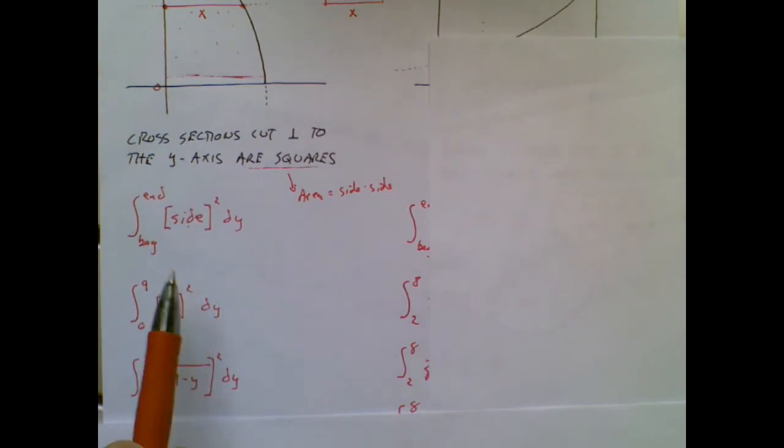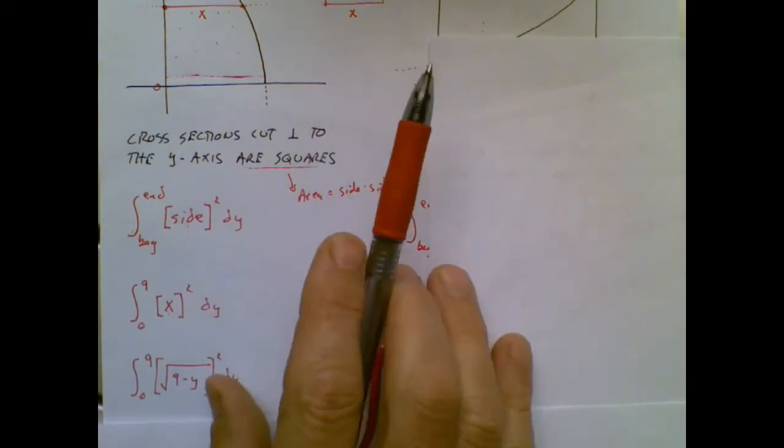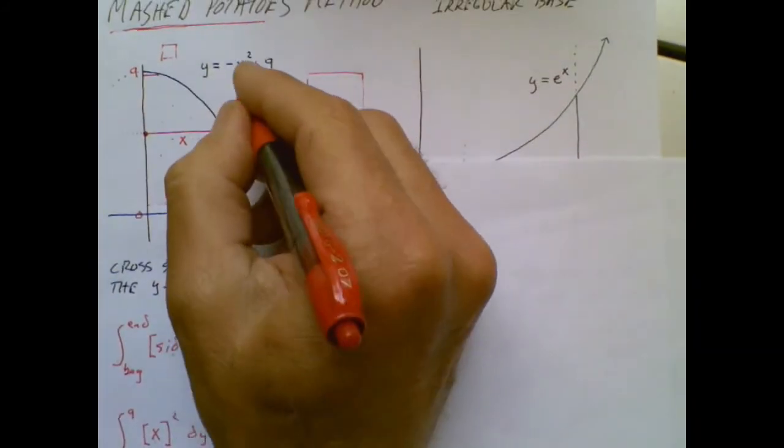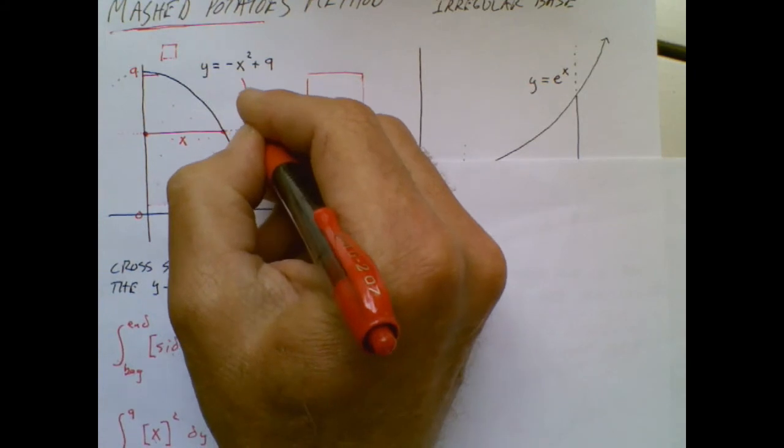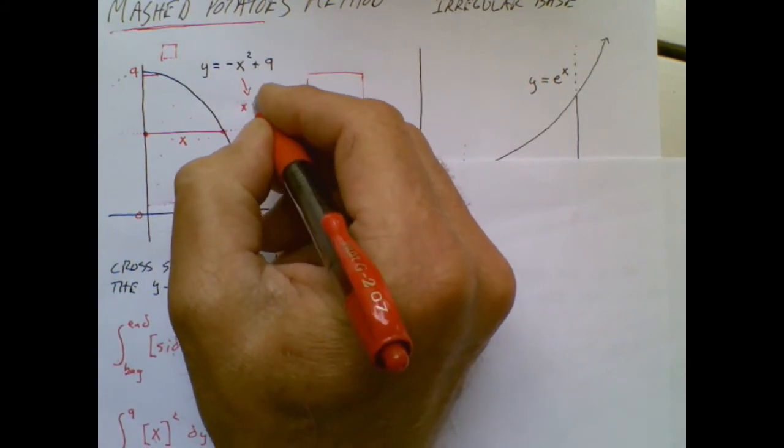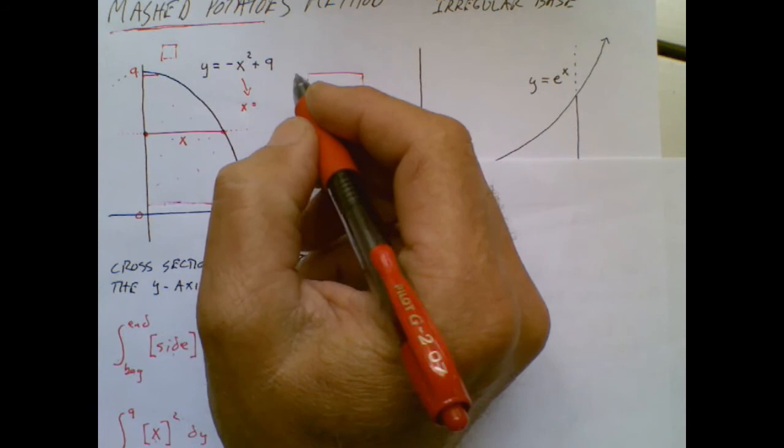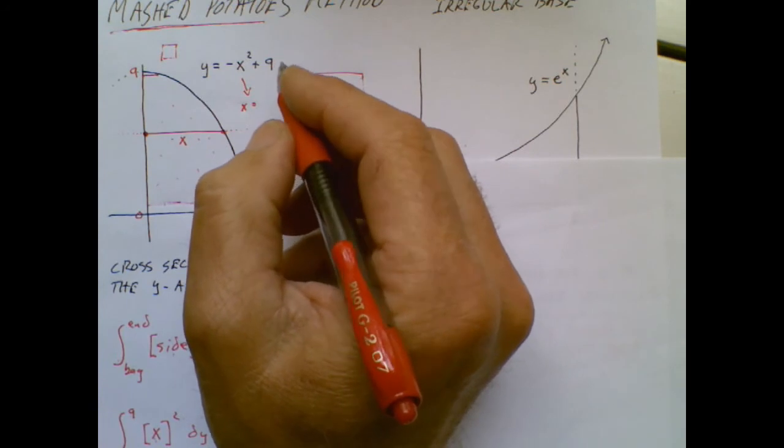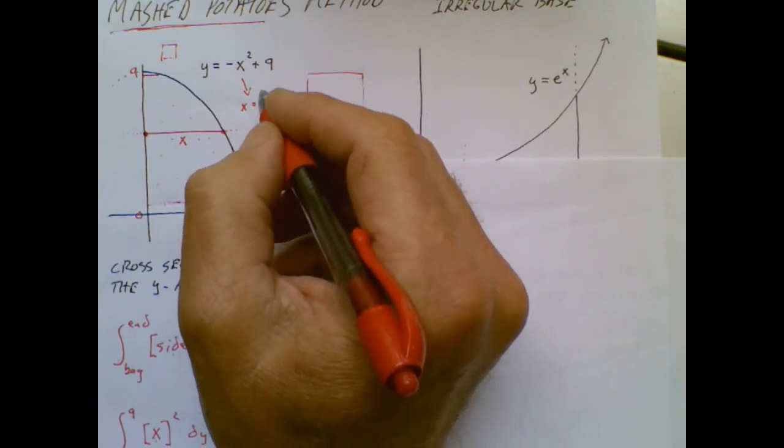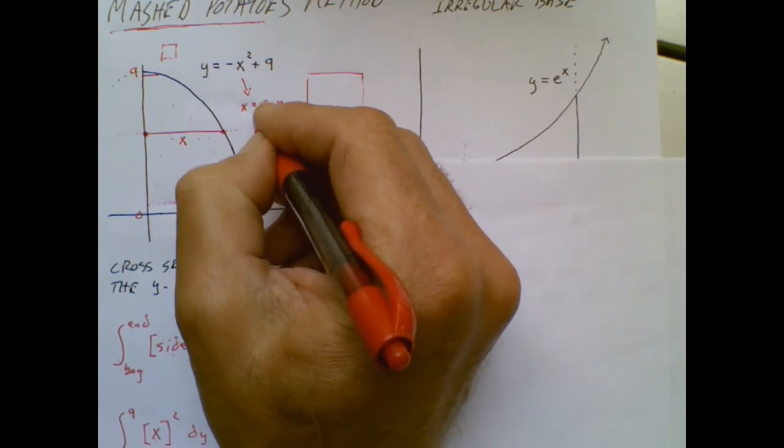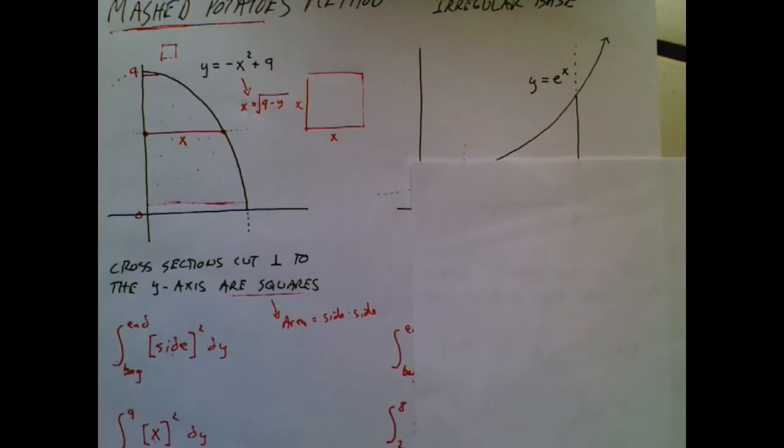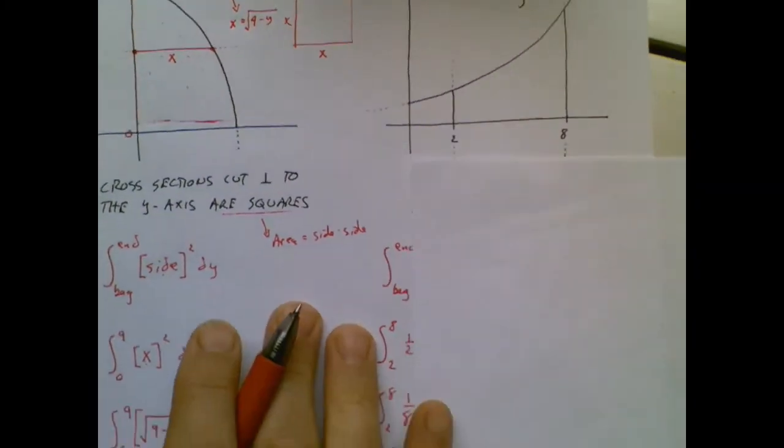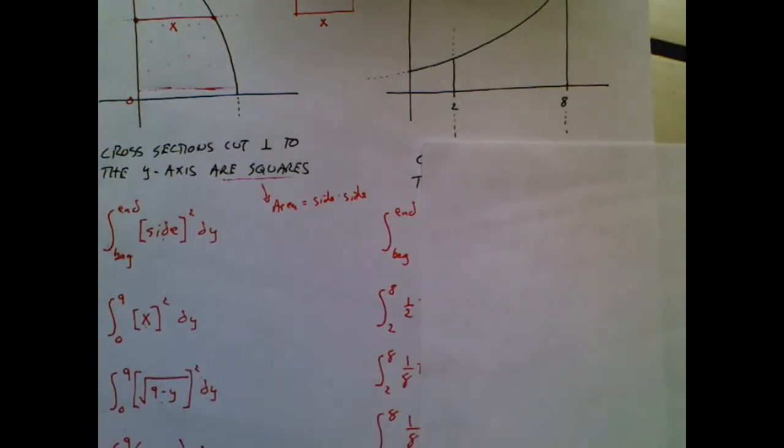I want to say x squared because that distance is an x. But x does not cooperate with the dy. So I take this equation and I turn it into an x equals equation. What would that be? That'd be 9 minus y. And I would have to square root it. And I would need the plus or minus. But that's not going to matter here because I'm going to square it.